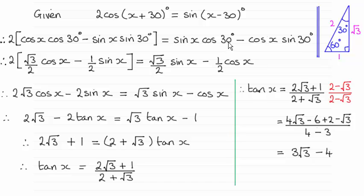And then what I've done is I've just substituted the exact values for the cosine of 30 and sine of 30, and we should know them from using this triangle. So substitute those values in there.